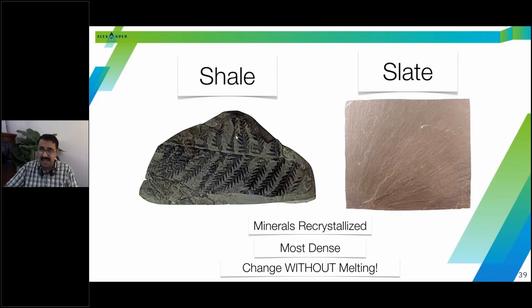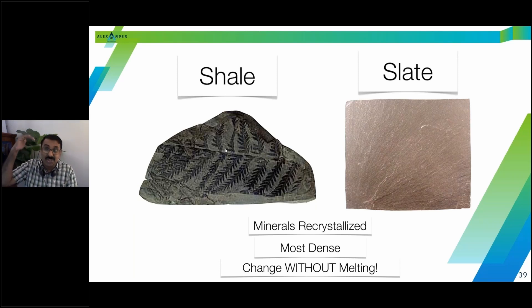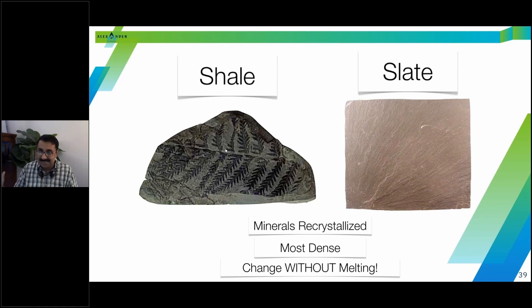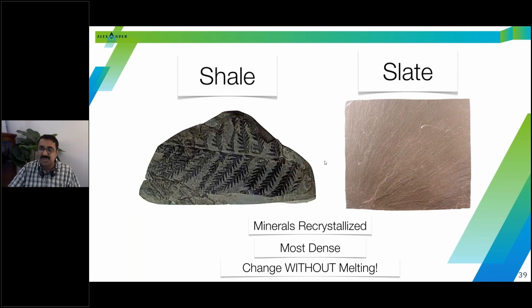You can see fossils inside shale because it's a sedimentary rock — for example, a fern leaf fossil. But once shale becomes slate, the rock has completely changed. The chemical elements may be similar, but the rock has been recrystallized under pressure or heat. If a fossil is present, it gets completely destroyed. Importantly, the rock doesn't melt — if it melted it would become magma again — it is simply recrystallized.